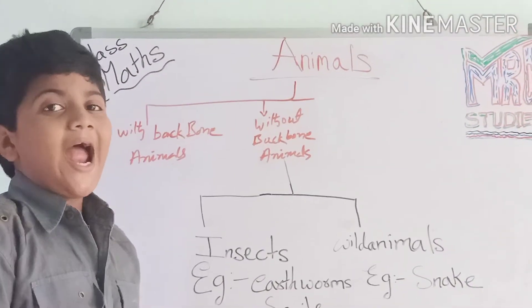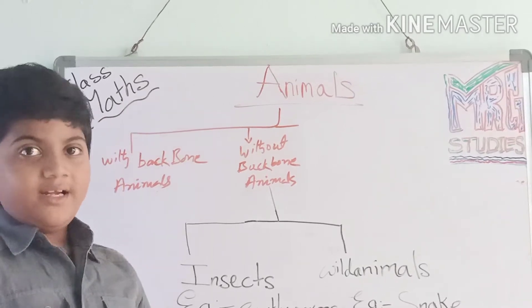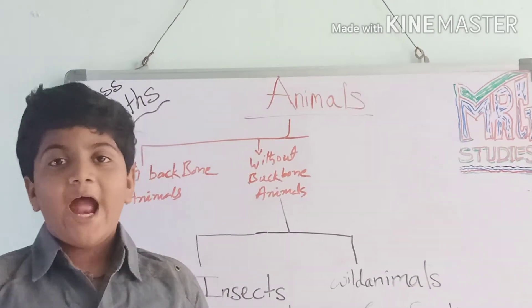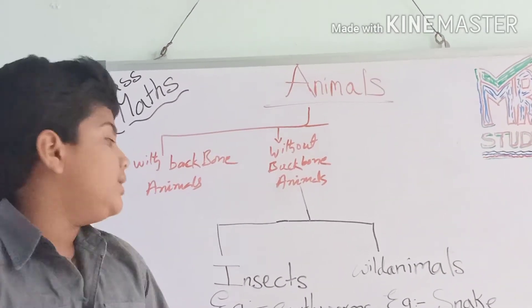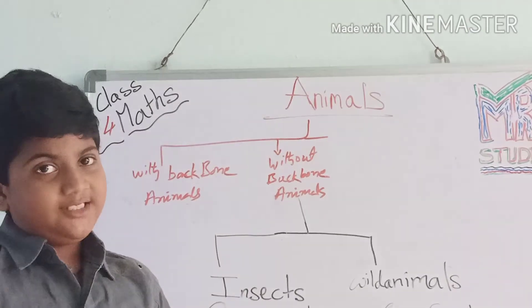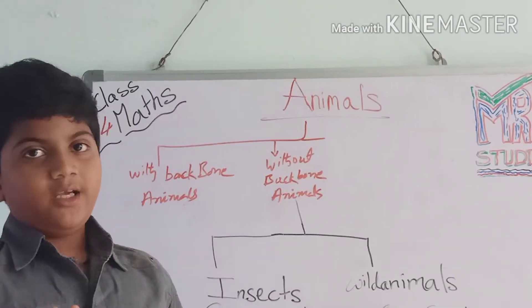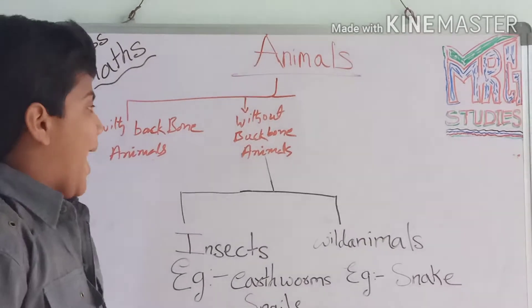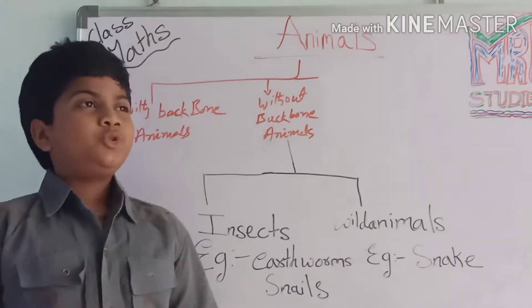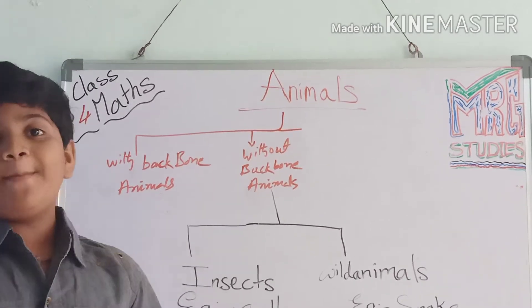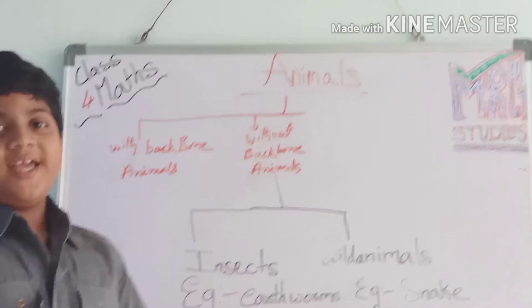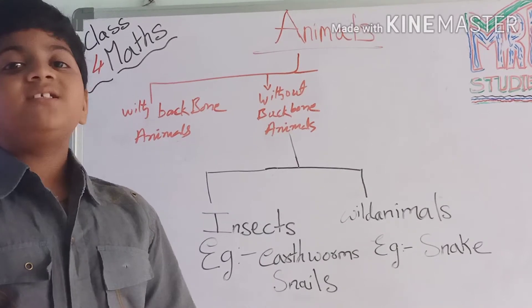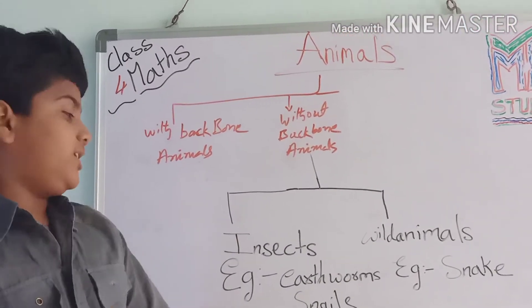With-backbone animals walk with legs. Four legs — like lions, dogs, and cats, etc. Insects have eight legs. Wild animals have four legs. Snake does not have legs. This is the without-backbone animal. Snake breathes through its scales — the scales take the breath.